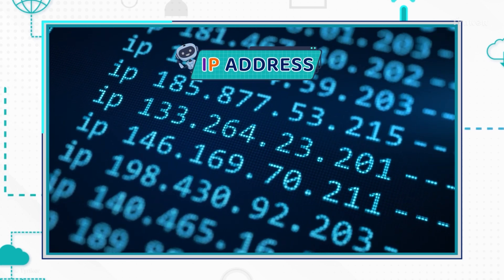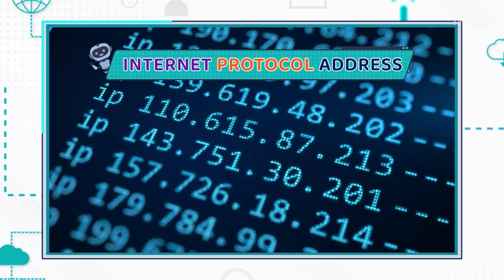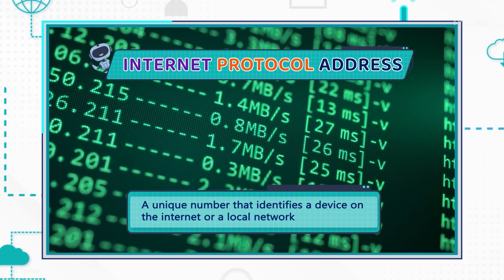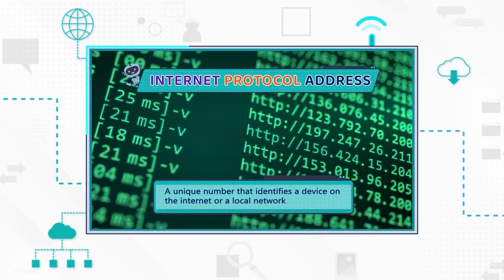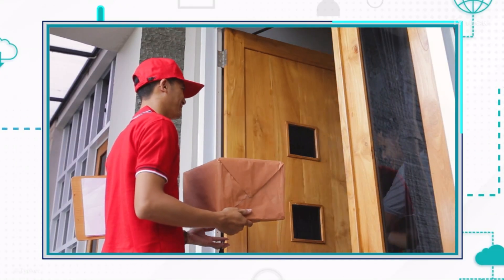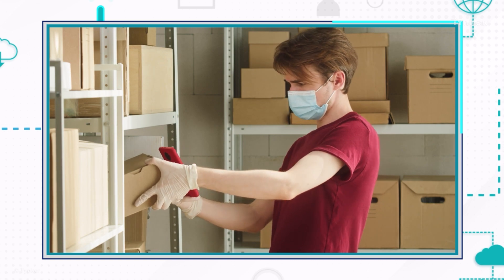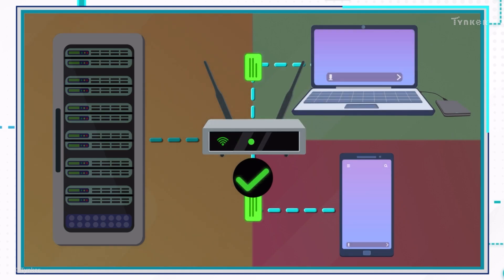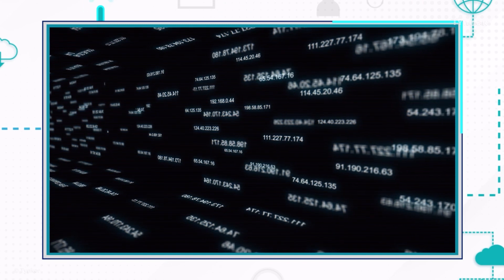The IP in IP address stands for Internet Protocol. An IP address is a unique number that identifies a device on the internet or a local network. Just as mail is delivered to your home after verification of your postal address, data packets are routed to the correct destination by the router after verification of the destination IP address.